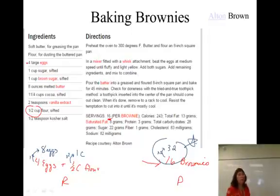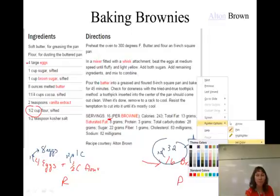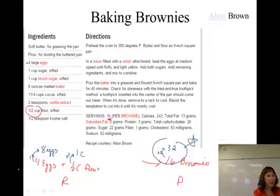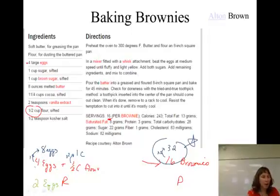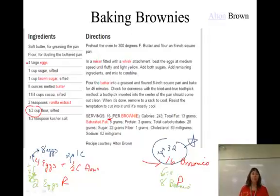You can also run the calculation the other direction. Say you go to your pantry and find you only have 2 eggs, but you really want brownies. Two divided by four is one-half, so you can only make 8 brownies. In that case the driving force of the stoichiometric calculation started with the eggs, and you determined how many brownies you could make.